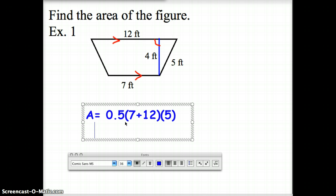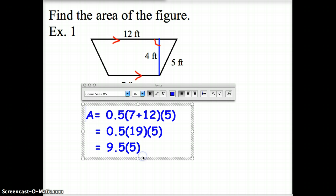So let's see, 7 and 12 is 19, so I've got half times 19 times 5. Let's see, half of 20 is 10, so half of 19 is 9 and a half. And then 9 and a half times 5 is 47 and a half.